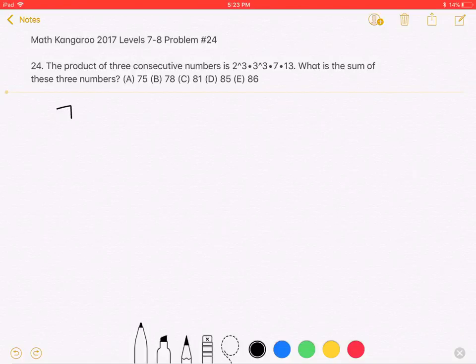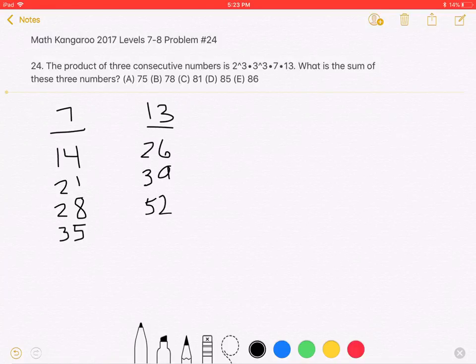We now must list some of the multiples of 7, which include 14, 21, 28, and 35, and so on. Now we must write some of the multiples of 13, which include 26, 39, 52, and so on. We now notice that 26 is 2 less than 28.